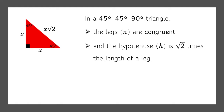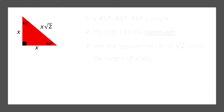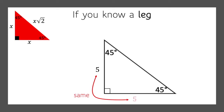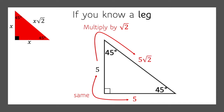Let me show you how this works out. Here we have a 45-45-90 triangle. Let's say you know one of the legs of the triangle — like this one's 5. You automatically know that the other leg is also 5. If you want to know the hypotenuse, you just have to multiply by the square root of 2. So the hypotenuse for this triangle is 5 times the square root of 2.